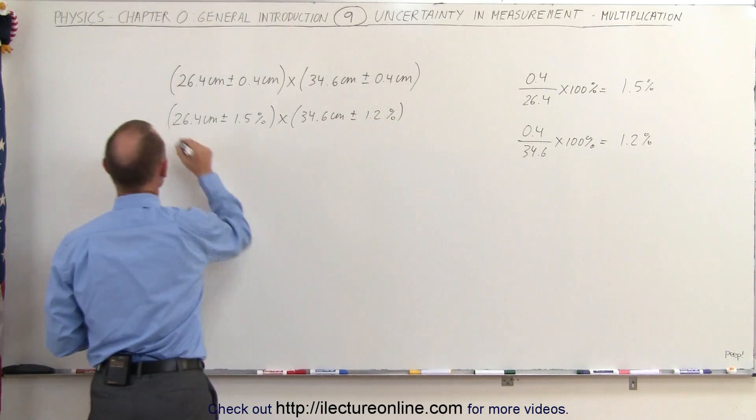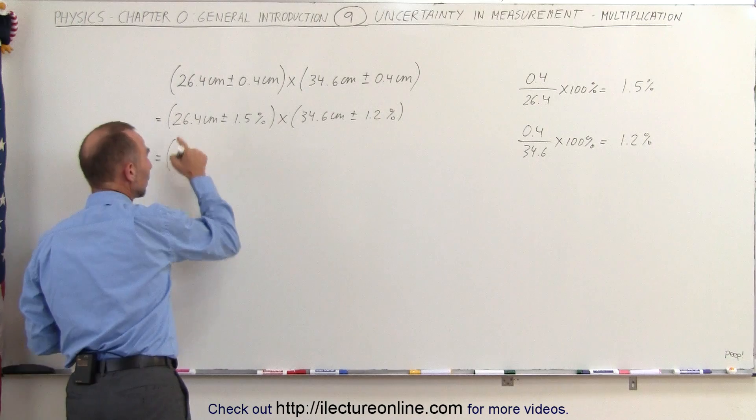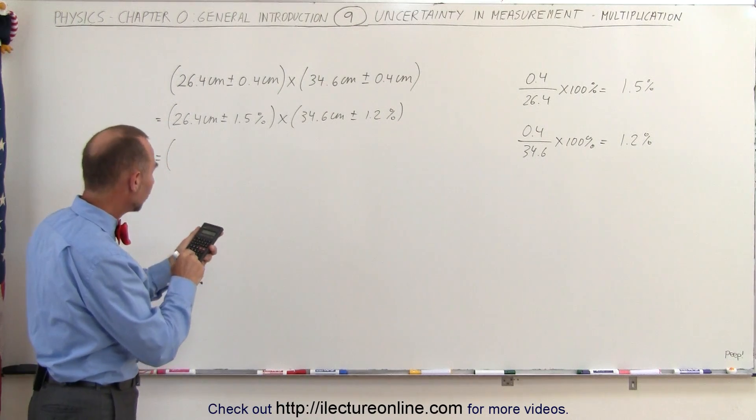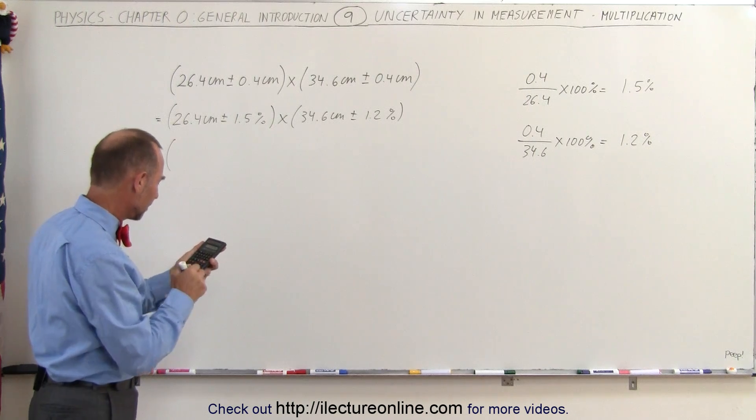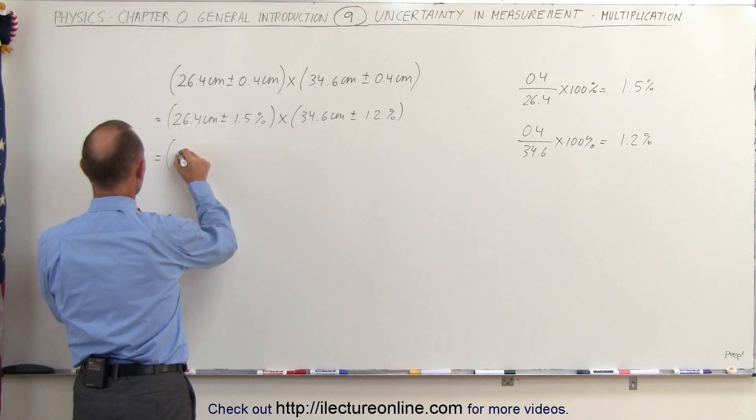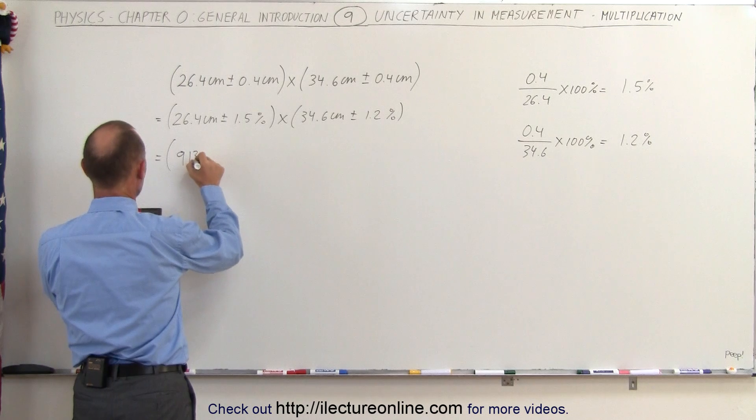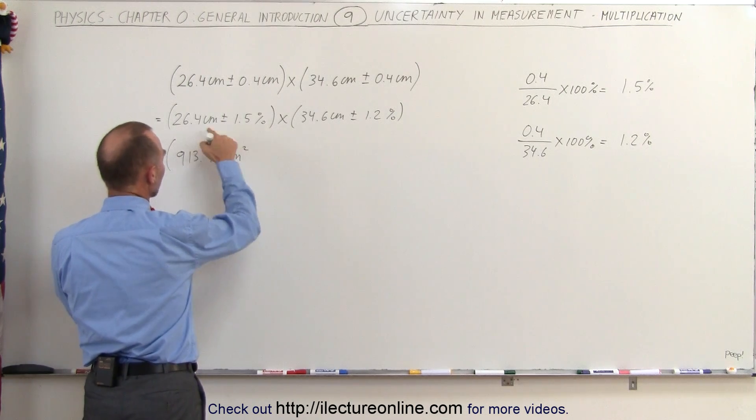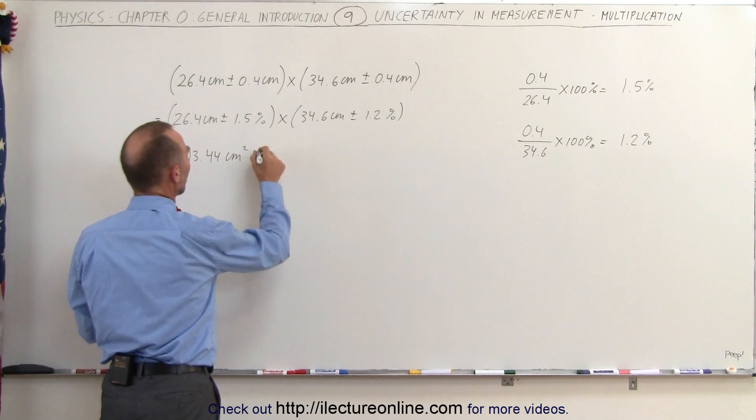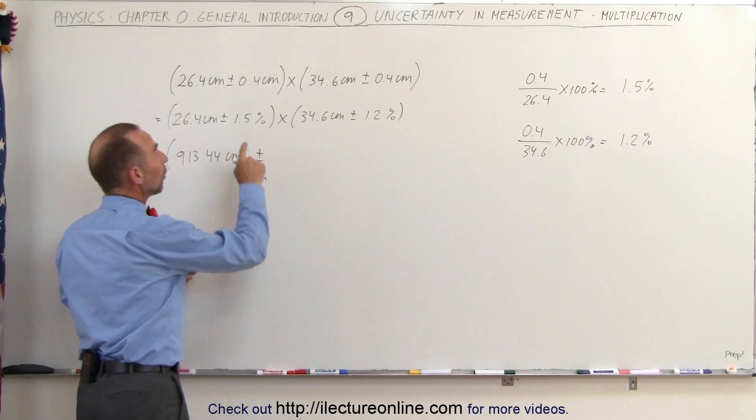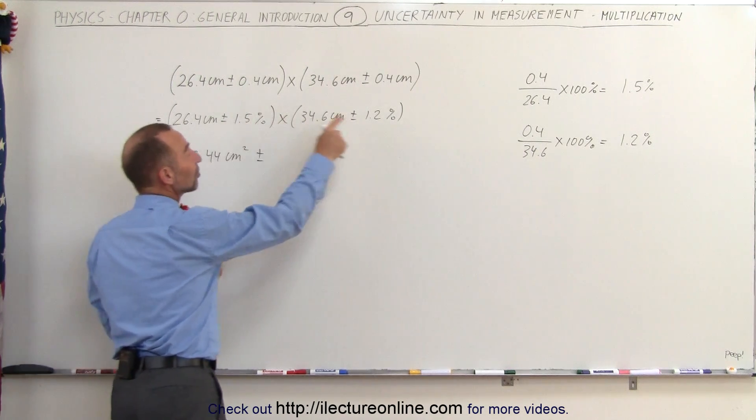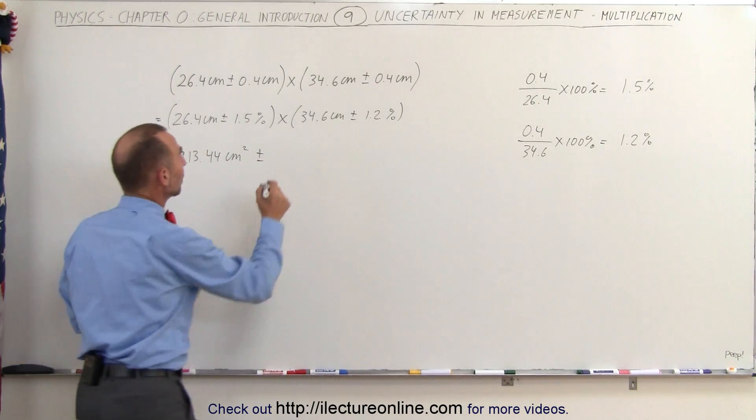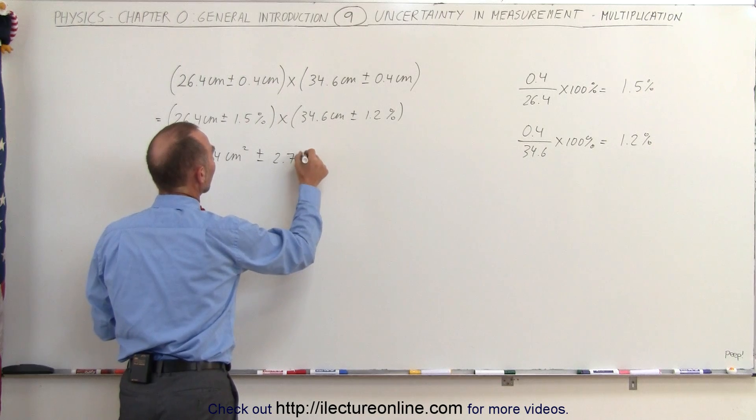Now when we multiply, we need to multiply that together, so we have 26.4 times 34.6, which gives us 913.44 centimeters squared—of course it's centimeters times centimeters, so centimeters squared—plus or minus. Now what we do here is add the percent uncertainties, so we add 1.5 to 1.2, that gives us 2.7 percent.